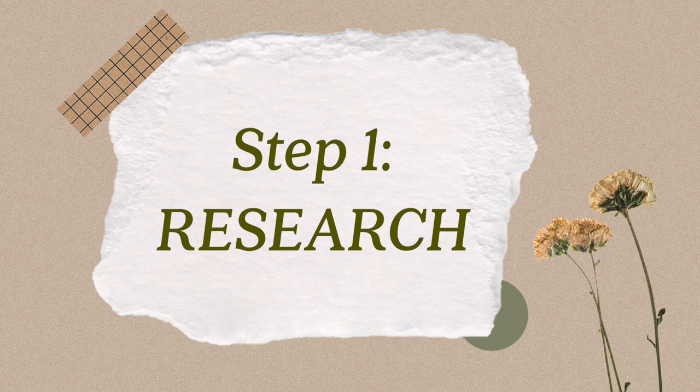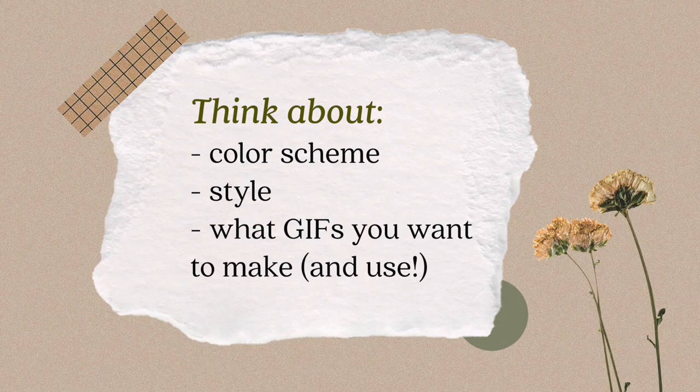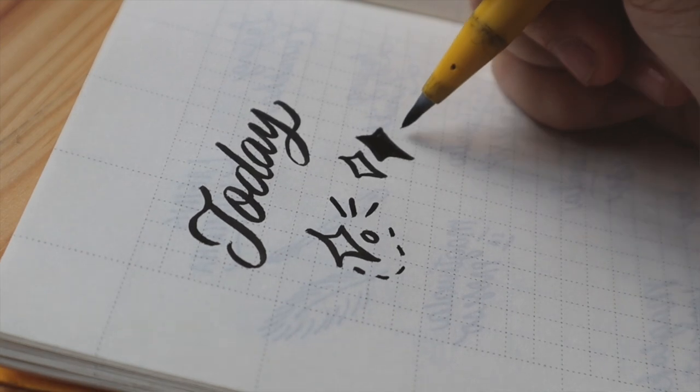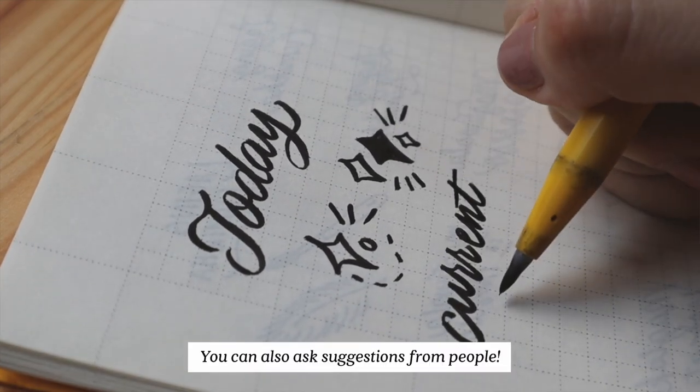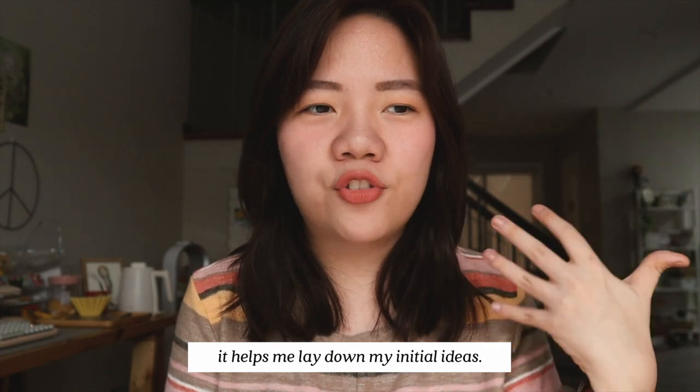Before we actually make the GIFs, the first thing I want you to do is research design ideas, color schemes, and the overall theme you want to create. You can make one GIF or three — for me I want to make at least five. Check out my GIFs by typing 'abc' on Instagram Stories — no space, just abc — and you'll find graphics I've made. I pulled in suggestions from people on Instagram and my patrons, and I drew everything out in a notebook first because it's really important to have that plan before getting into Procreate.